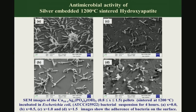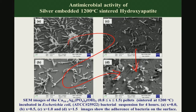The same is true for x equal to 1.0 and x equal to 1.5. When these materials are sintered at 1200 degrees Celsius, slightly different results are shown: the number of viable bacteria on the material substrate decreases depending on the level of silver substitution, but you see considerably more bacteria compared to sintering at 800 degrees Celsius, particularly when the substitution level is quite high like 1.5.